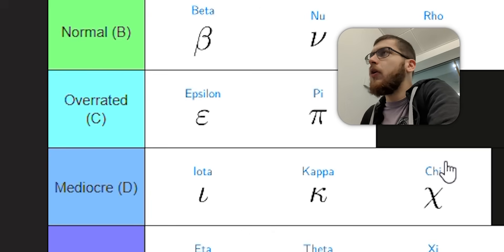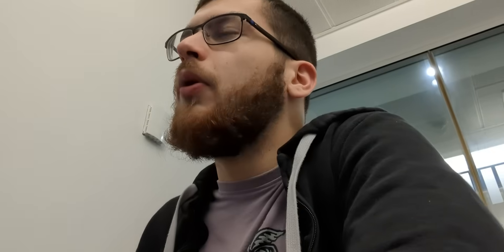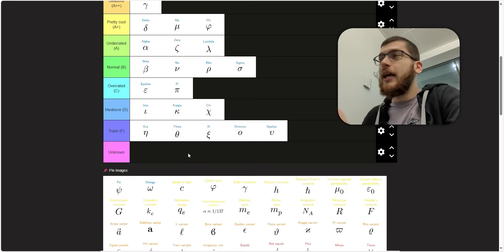Chi. I think that's how you pronounce it. This is used in chi-square tests, which is in statistics, which I kind of have PTSD about. So I'm going to have to put it in mediocre. If it wasn't used for statistics, I would put it maybe at B or C tier. But it was used in the chi-square tests. I just hated it.